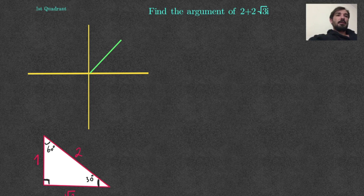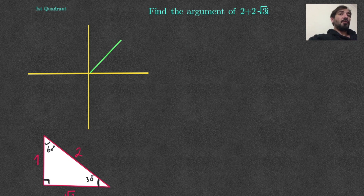Hi everyone, today we are going to learn the argument of complex numbers. To make it easy, I made it 4 quadrants — I will go over each quadrant with one example to make it clear for everyone.